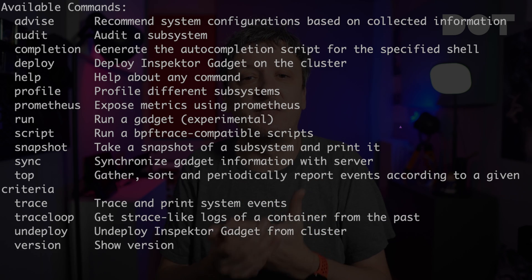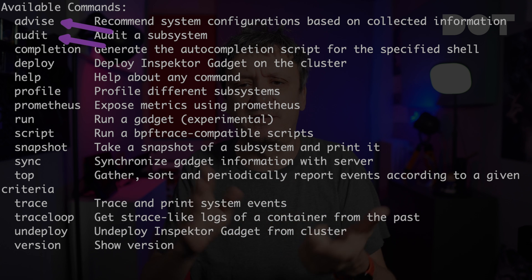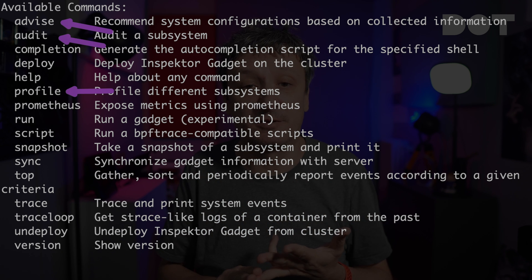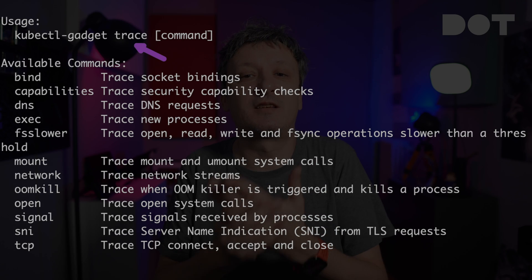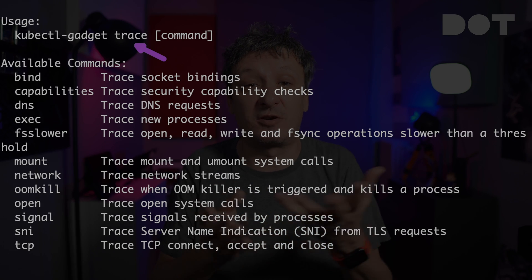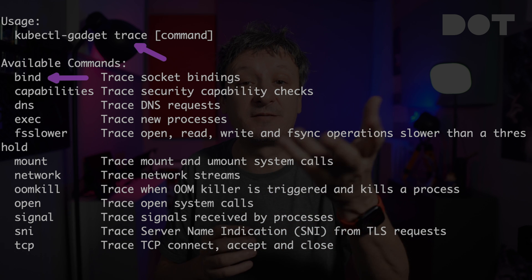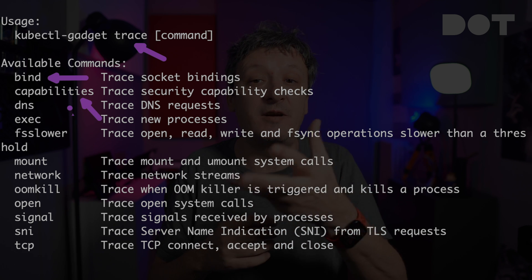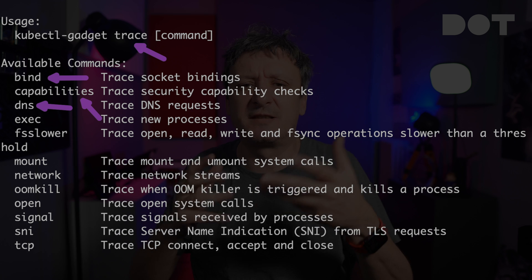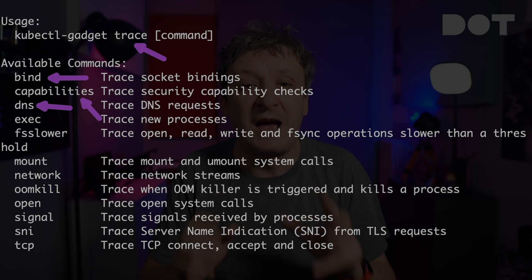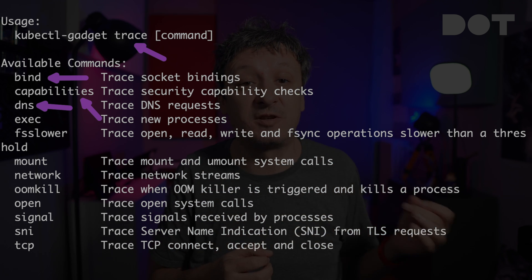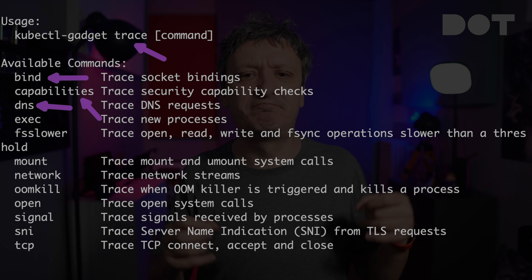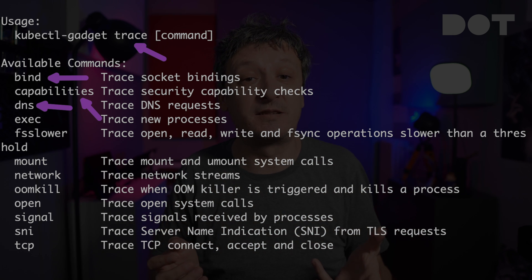The commands are divided into categories like advice, audit, profile, and so on. For example, let's see what kind of tracing we can do with it. We can see that trace alone contains quite a few things like socket binding, checking for security capabilities, trace of DNS requests, and more. I will not go through all of the gadgets at our disposal — instead, we'll take a quick look at a few I selected.